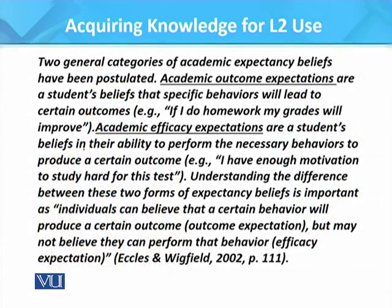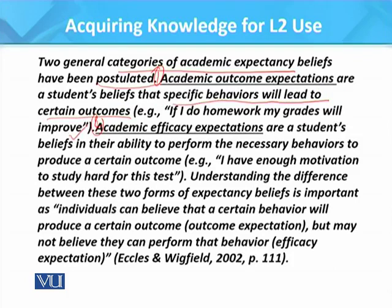Two general categories of academic expectancy beliefs have been postulated. One is academic outcome expectation and the second is academic efficacy expectation. Academic outcome expectations are students' belief that specific behaviours will lead to certain outcomes — for example, if I do homework, my grades will improve.